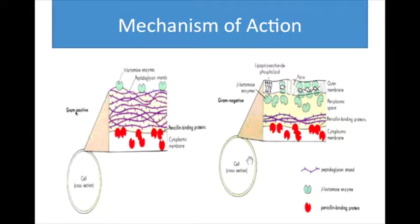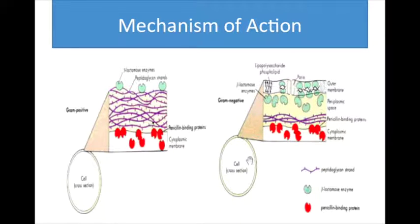Mechanism of action: both gram-positive and gram-negative bacteria have beta-lactamase enzymes. These enzymes are responsible for the inactivation of penicillins. Gram-negative bacteria have more beta-lactamase enzymes, which is why it is harder to penetrate a gram-negative bacteria than a gram-positive one. All bacteria produce penicillin-binding proteins, also known as transpeptidase. These transpeptidases, or PBPs, are responsible for the cross-linking of the peptidoglycan layer. PBPs are usually located in the cytoplasmic membrane, so penicillins and cephalosporins have to go through the cell wall to target these PBPs.